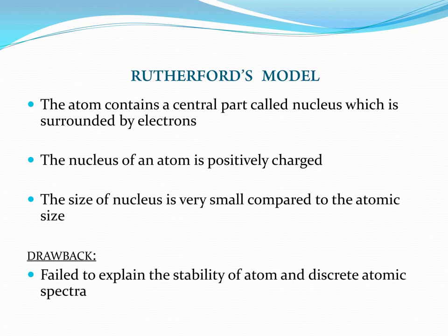Rutherford's model has many characteristics. The atom consists of a central part called the nucleus, which is massive. The nucleus has a positive charge and is very small in size. Rutherford's model also has a drawback: it could not explain stable atoms or discrete atomic spectra.